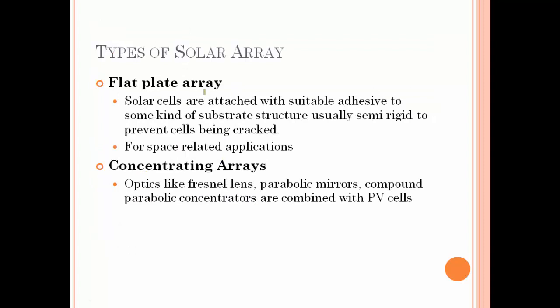There are two types of solar arrays: flat plate arrays and concentrating arrays. In flat plate arrays, solar cells are attached with a suitable adhesive to a substrate structure, usually semi-rigid to prevent cells from being cracked. This is similar in concept to the flat plate collector used for solar heat.